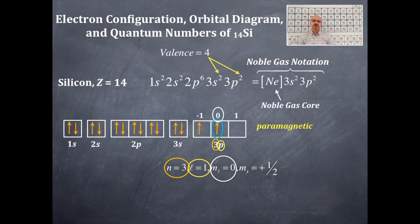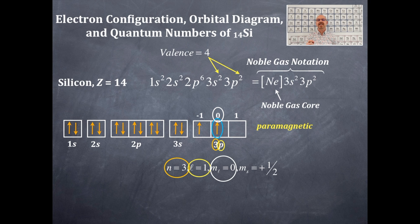The last one is the M sub S value — the spin of the electron. This has nothing to do with the orbital. The first three quantum numbers — N, L, M sub L — have to do with the orbital itself. That last quantum number has everything to do with the spin of the electron. It's either clockwise spin, positive one-half, or negative one-half, which is a counterclockwise spin. Since this arrow is up, that's a positive one-half.